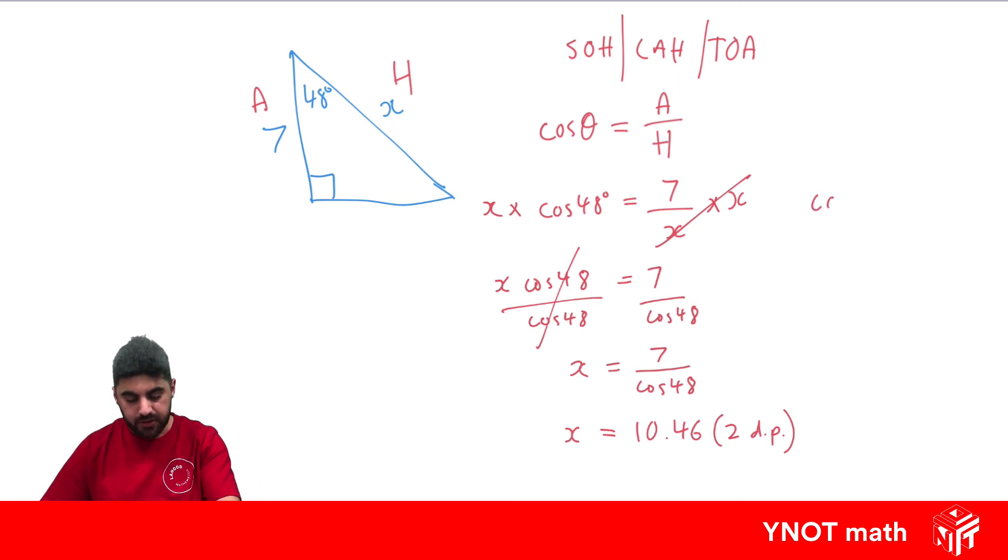If you have that situation, let's take it again. Cos 48 equals 7 over x. When you realize that x is in the denominator, you could just switch them. Because if you have a look over here, they end up switching around. It's not very mathematical, but you can do it. Another way is to use this trick.